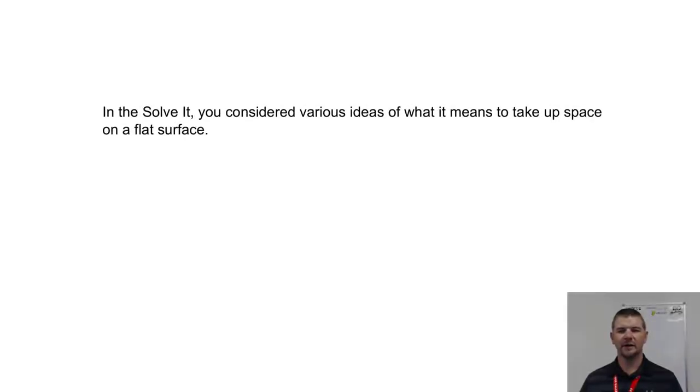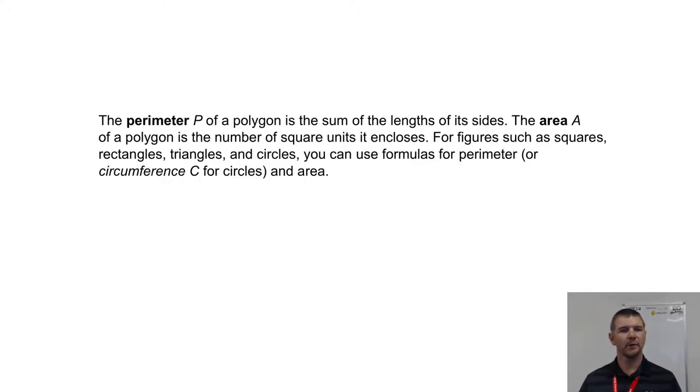In this lesson, you'll consider various ideas of what it means to take up space on a flat surface. The perimeter P of a polygon is the sum of the lengths of its sides. The area A of a polygon is the number of square units it encloses. For figures such as squares, rectangles, triangles, and circles, you can use formulas for perimeter, or circumference C in the case of circles, and area.